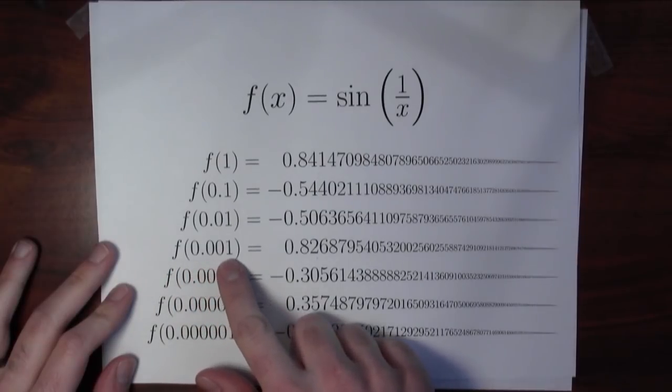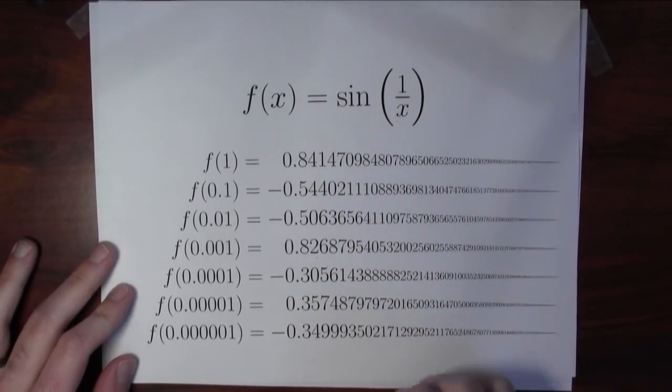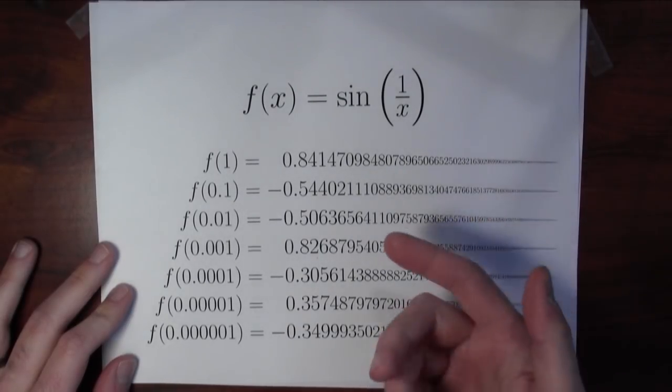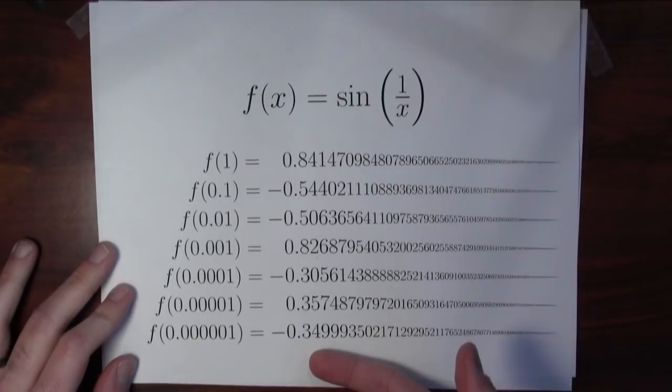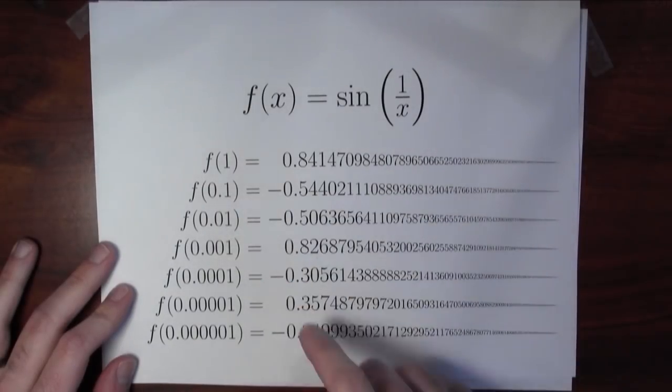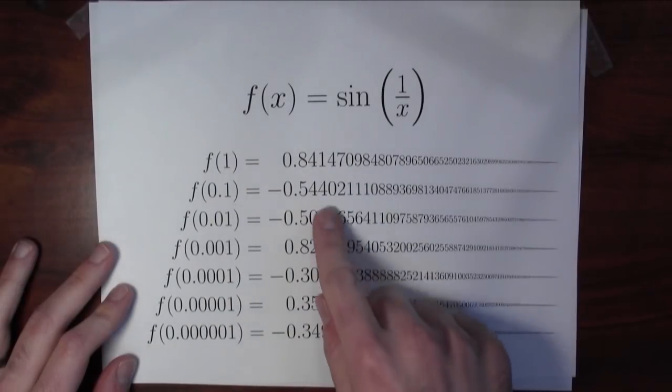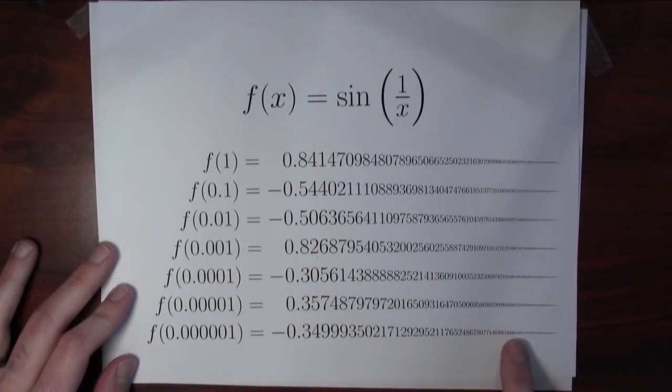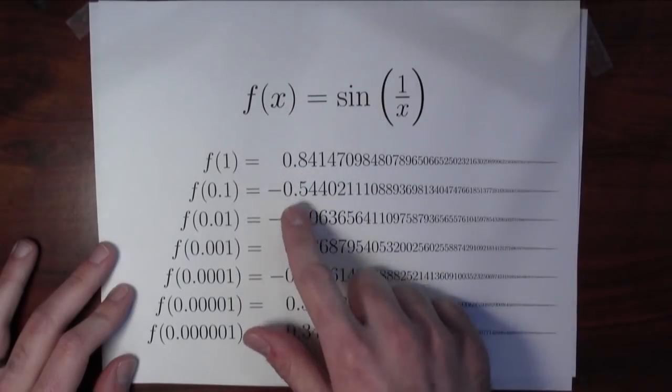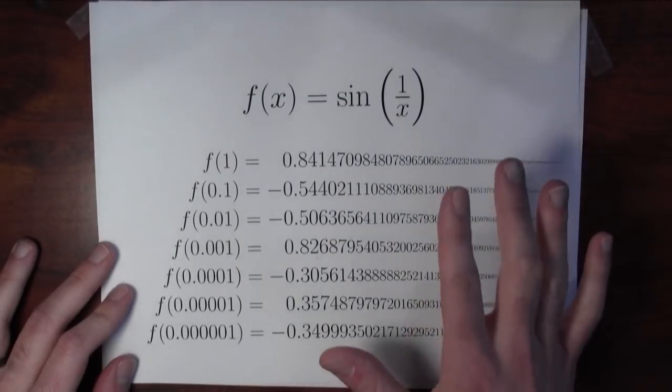f of 0.001, which is like sine of 1,000, well, that's 0.8 and some more. So the question is, are these numbers really getting close to anything in particular? Can you really say that if you evaluate f at values which are close to but not equal to 0, that the outputs are actually getting close to anything in particular? This is positive, negative, negative, positive, negative, positive, negative. It's looking pretty bad.